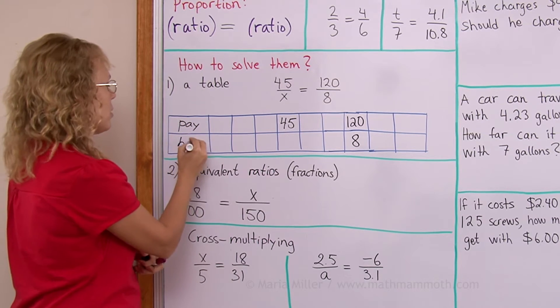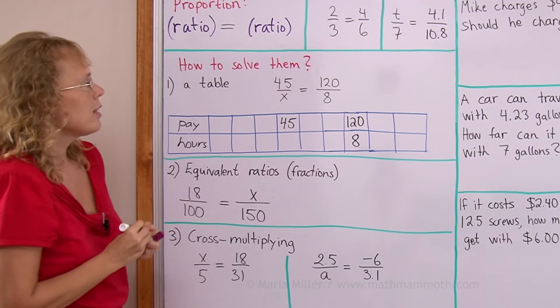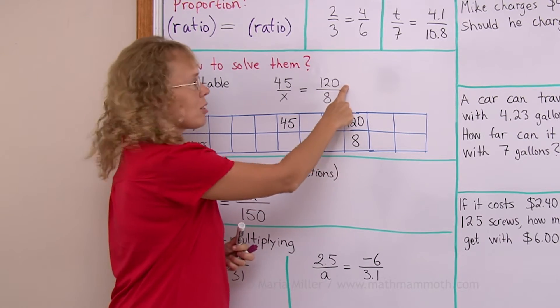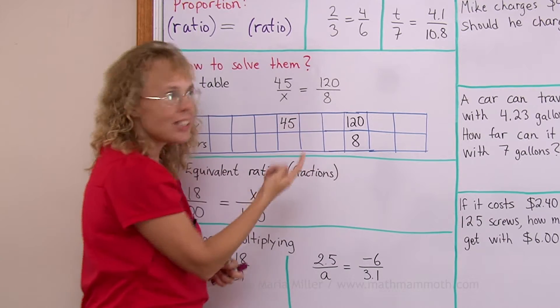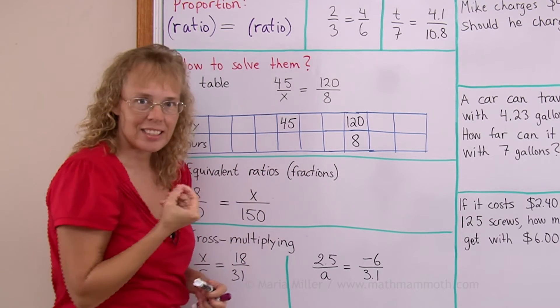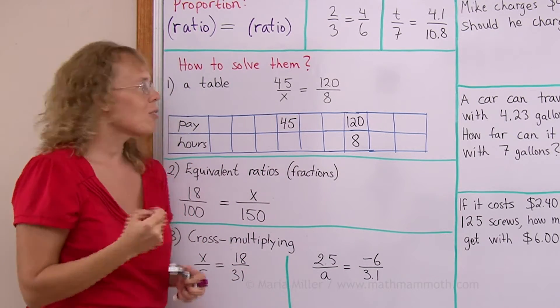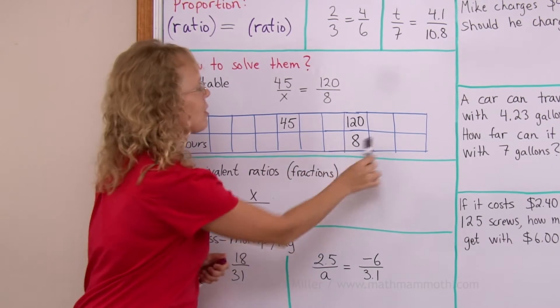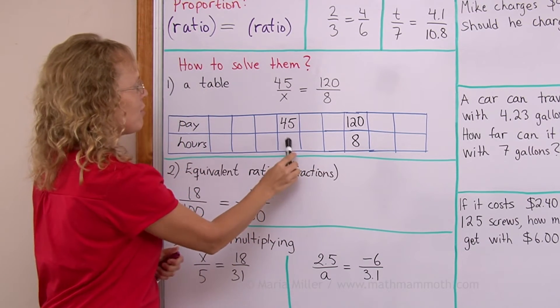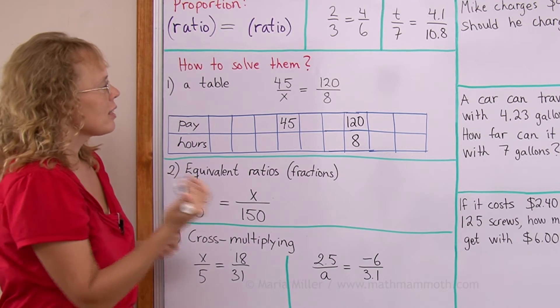And then these are hours, for example. And then this would mean 120 dollars per 8 hours, right? And this would mean 45 dollars per x hours, unknown amount of hours. So I would put this into the table. This is my unknown that I need to find out.